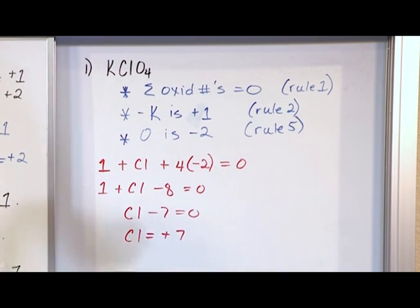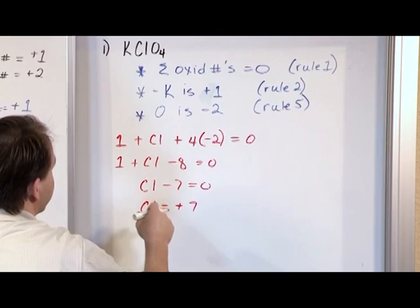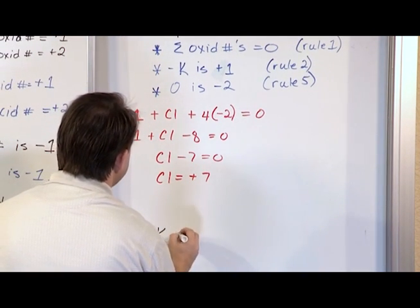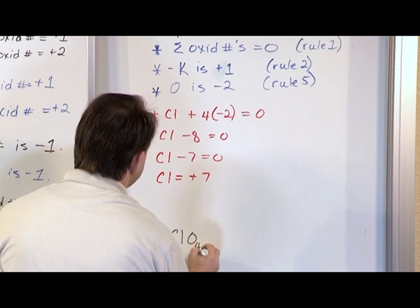So what I have found is the oxidation number of chlorine is actually plus seven. So the way that you write this down for your answer, or you can do it any way you want, you can circle them I guess. But a lot of the ways that you'll see it is you'll see the compound rewritten, KClO4.